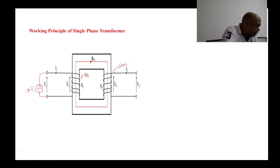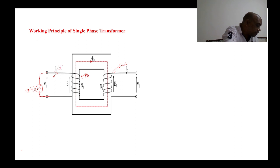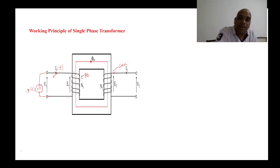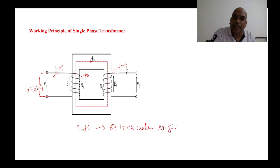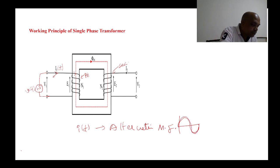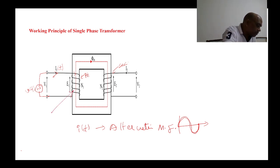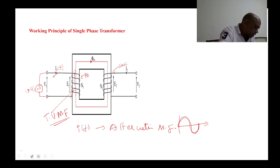That is why you must give alternating supply — alternating voltage. When alternating voltage is applied, alternating current I(t) passes through the coil. Whenever alternating current passes through the coil, an alternating magnetic field is developed. This alternating magnetic field is nothing but a time-varying magnetic field, which varies with respect to time.